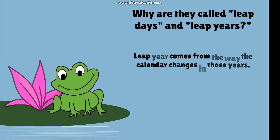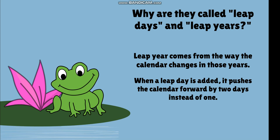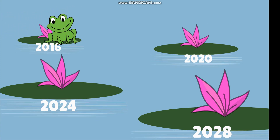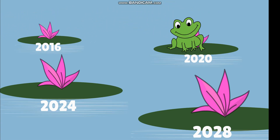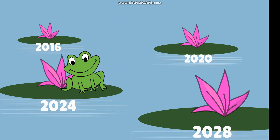Why are they called leap days and leap years? The term leap year comes from the way the calendar changes in those years. When a leap day is added, it pushes the calendar forward by two days instead of one — it's like a frog leaping onto a lily pad. That pretty much explains why the frog represents the leap day and leap year.